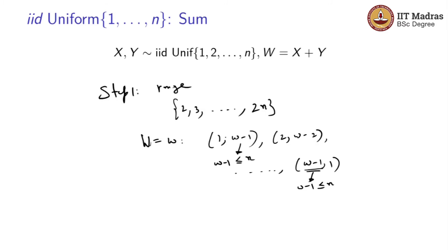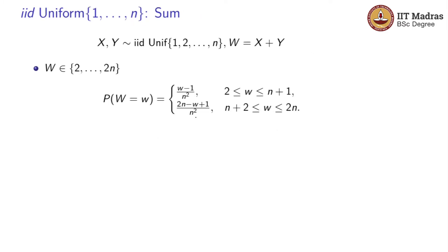I am going to leave it as an exercise for you and justify why this answer is correct. The probability of W equals w is w minus 1 by n squared for w between 2 and n plus 1. And from n plus 1, n plus 2 to 2n, you will get 2n minus w plus 1 by n squared. It's an exercise to prove this formula. It's a good exercise. Try out various cases. You will quickly see the pattern, and once you identify the pattern, you will be able to do this.